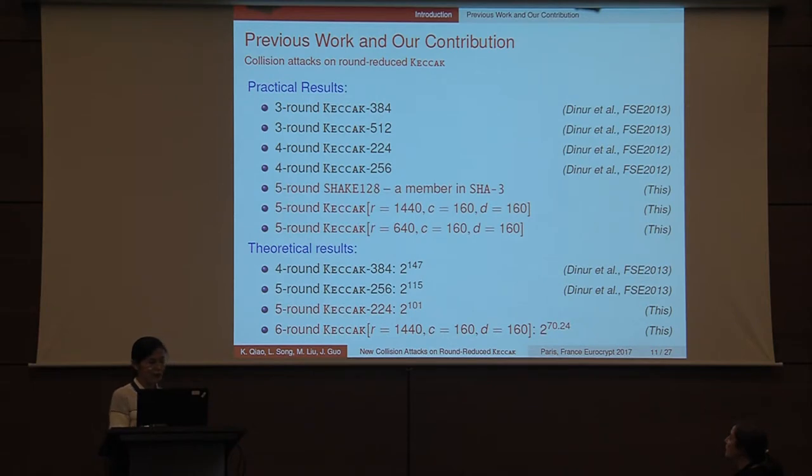In our work, we find the practical collisions of five-round Keccak-128. It is a member in standard SHA-3. We also find collisions on two five-round challenge versions with smaller digest size or state size. These smaller versions are also proposed by the Keccak team to promote cryptanalysis on this family. And we also improve the theoretical results to five-round Keccak-224 and the six-round challenge version with complexities below the birthday bound.